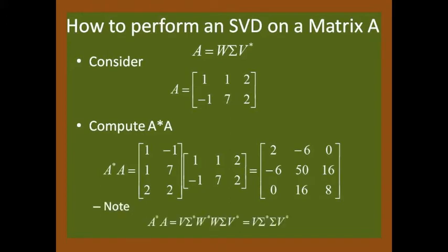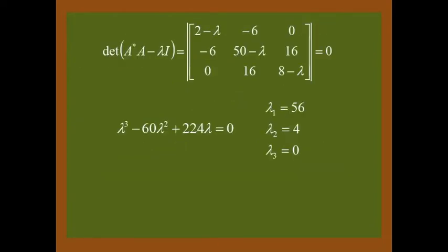Also, the A adjoint A is equal to V sigma squared V adjoint. This is due to the orthogonal property of W. Let's find the eigenvalues. This leads to the deterministic equation with the roots 56, 4, and 0. Therefore, we can write sigma as such.